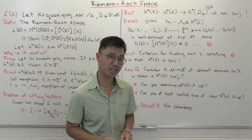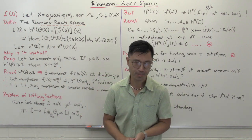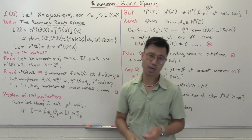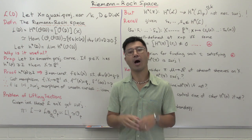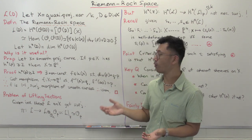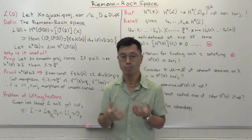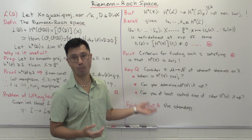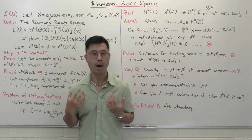Hi, I'm Daniel Chan from UNSW Sydney. Welcome to another adventure in pure mathematics. In this video I want to talk about the Riemann-Roch space and show how it's useful in the study of algebraic geometry. I then want to talk about some subtleties that are involved in trying to study the Riemann-Roch space, and these subtleties will motivate the introduction of a rather sophisticated tool called cohomology, which is the theme of this playlist.